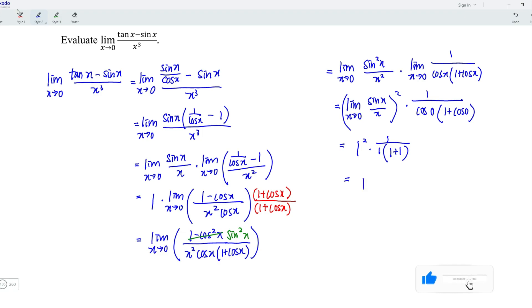And this is equal to 1 multiplied by 1 over 1 multiplied by 2, which is simply 1 over 2. And hence, we're done. Okay, that's all for this video. Thanks for watching. Hope you like this. See you.